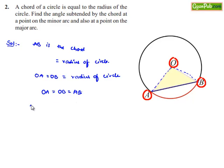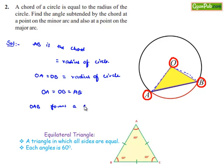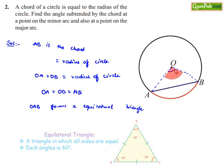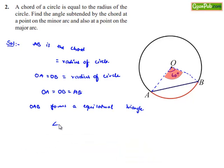Therefore, we can say that OAB forms an equilateral triangle. Therefore, the angle subtended by the chord AB at the center is 60 degrees — that is, angle AOB is equal to 60 degrees.